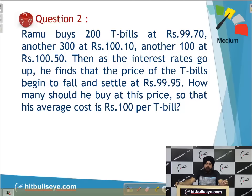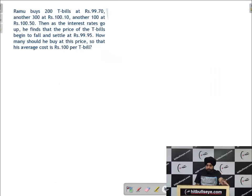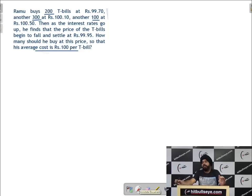In the next question we will learn the concept of weighted average and its application — how to make questions look very simple — and also understand average as an act of balancing. The number of T-shirts in each category is given as 200, 300, 100 and so on. We take 100 as a common factor and focus on the ratios, with the overall average being 100.